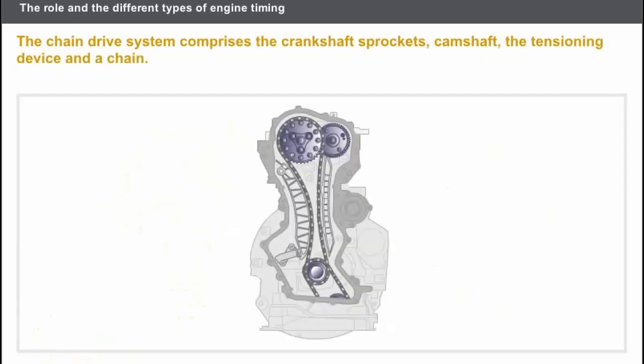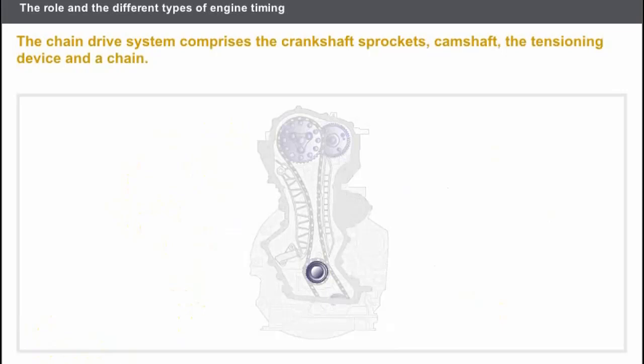Now, let's take a look at the chain drive. The timing principally comprises the crankshaft sprocket, the camshaft sprocket, the chain tensioning device, and a chain.